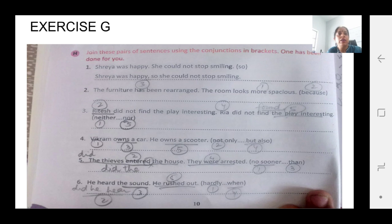Now I will do number 6. 4 or 5 you have to do it. He heard the sound. He rushed out. Hardly when use karna hai. So see numbering ke saath se. Hardly did he hear the sound when he rushed out.